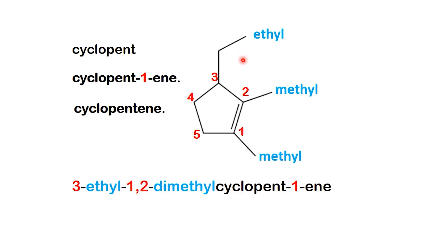When writing the full name, substituents must be listed in alphabetical order. Since ethyl comes before methyl, the final name of this compound is 3-ethyl-1,2-dimethylcyclopent-1-ene. Or, more simply, 3-ethyl-1,2-dimethylcyclopentene.